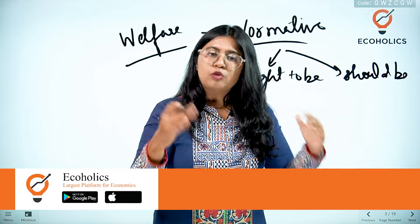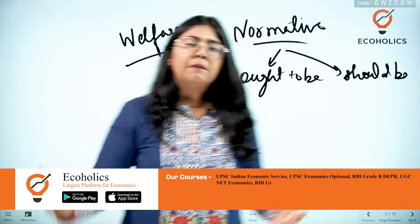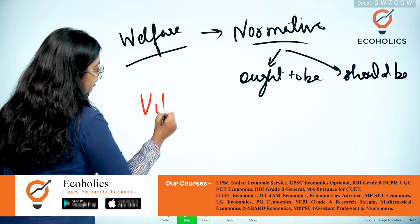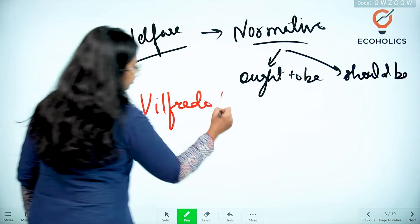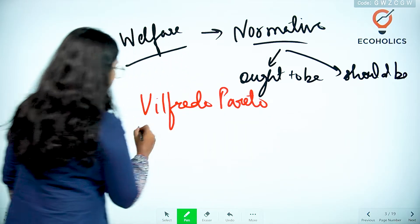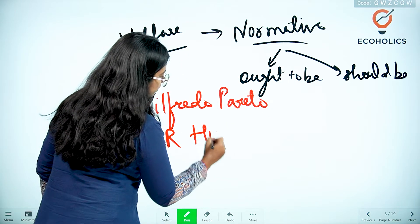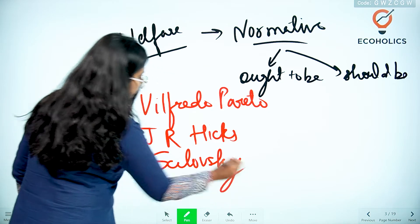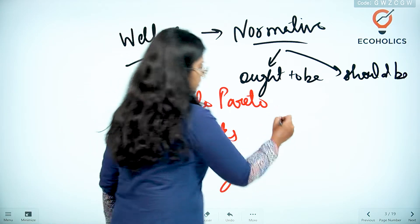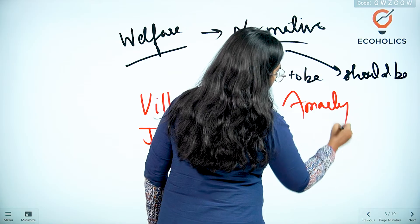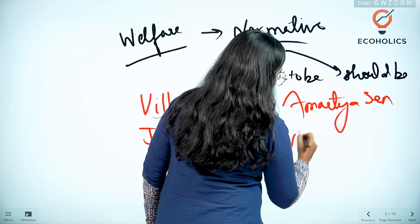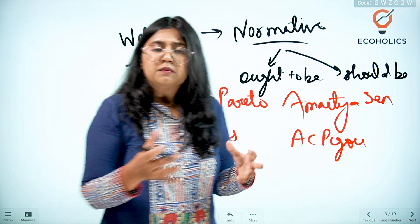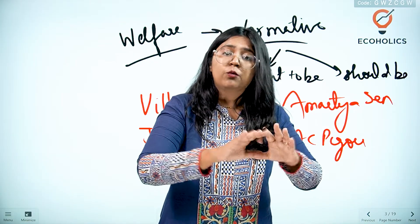The welfare approach also has certain parameters, and these ideas were given by economists such as Wilfredo Pareto, J.R. Hicks, Scitovsky, and many others — Amartya Sen, A.C. Pigou — there have been a lot of economists who were concerned about the welfare approach.